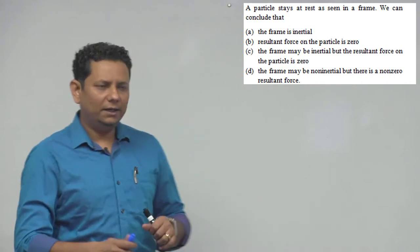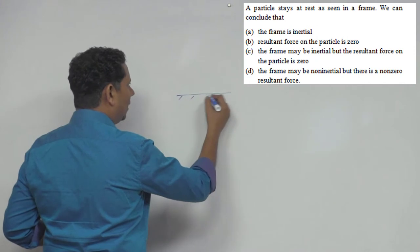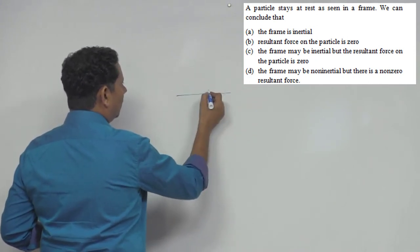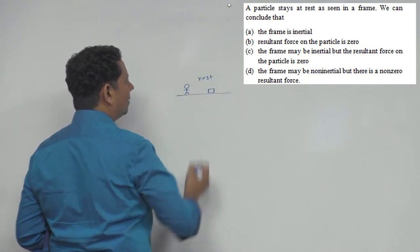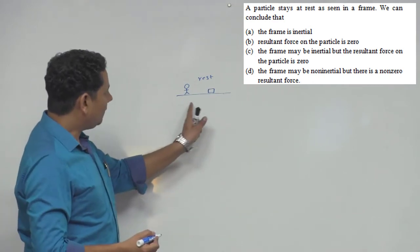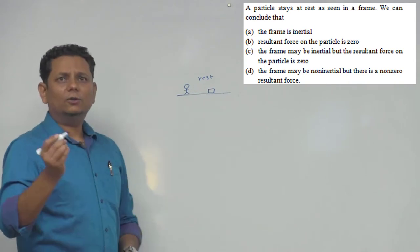If you see, for example, this particle - you observe it from here. Let's say this is your motion or a block. You observe it from here and from here, and both appear at rest with respect to each other. Now about this motion, a particle stays at rest as seen in a frame. So if the option is the frame is inertial, the first option...